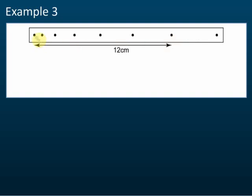Because the distance is from this dot to this dot, when you find the time you must only count from this dot to this dot — don't include the extra one. Now Example 3: find the velocity. Give me your answer.